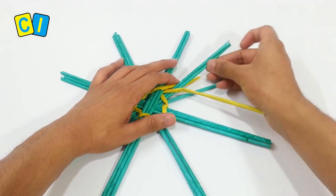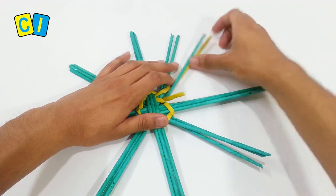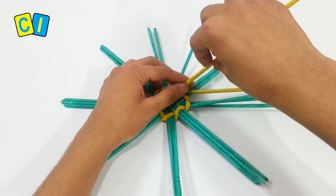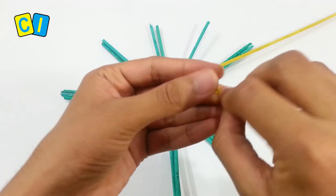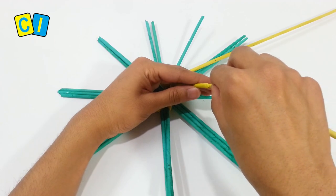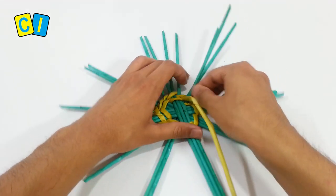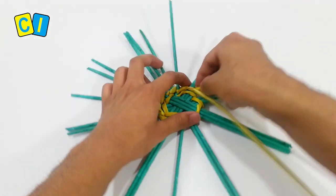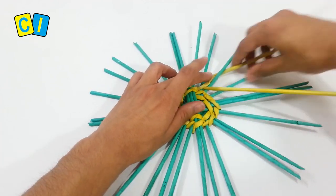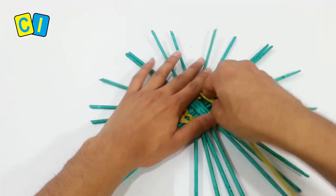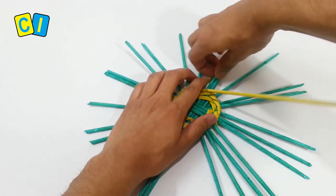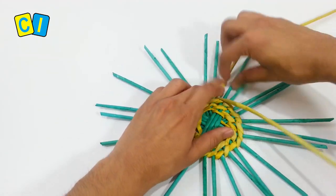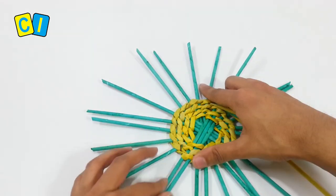After completing one round, separate one tube from each group. Fold a tube and insert inside. Again complete one round. Now separate the tubes and continue weaving. Separate the tubes evenly.